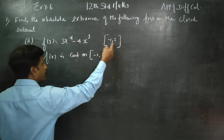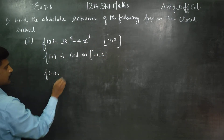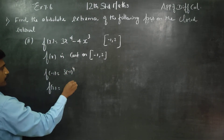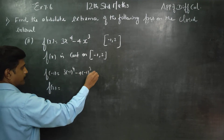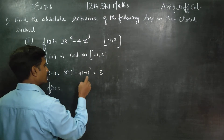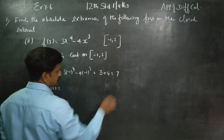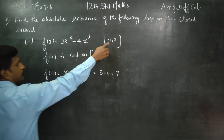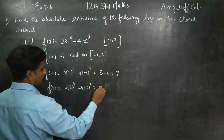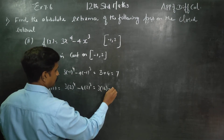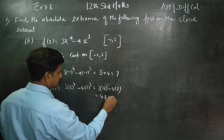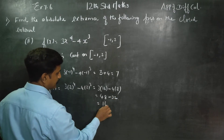First we find f(a) and f(b). f(-1) equals 3 times (-1)⁴ minus 4 times (-1)³. Since (-1)⁴ is 1 and 3 times 1 is 3, and (-1)³ is -1, minus 4 times -1 gives plus 4, so the answer is 7. Then f(2) equals 3 times 2⁴ minus 4 times 2³. 3 times 16 is 48, and 4 times 8 is 32. Subtracting gives 16.